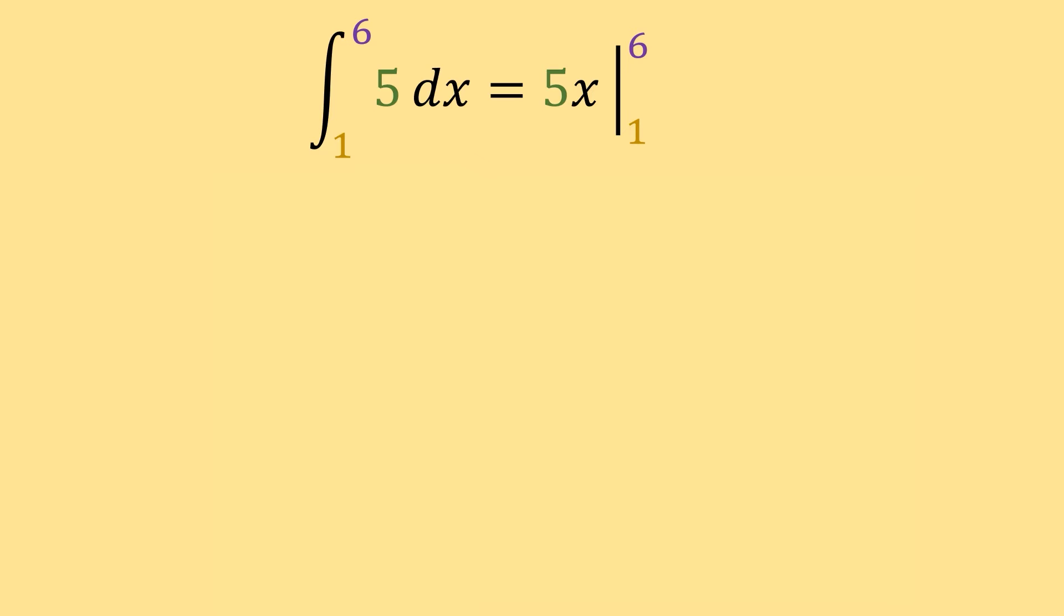When we evaluate, we substitute our top bound first. So, we substitute 6 into x, and we get 5 times 6. And then we subtract 5 times 1 by substituting the 1 in. Notice, we can factor the 5 out of this, and we get 5 times 6 minus 1, which is then equal to 5 times 5, which then equals 25.